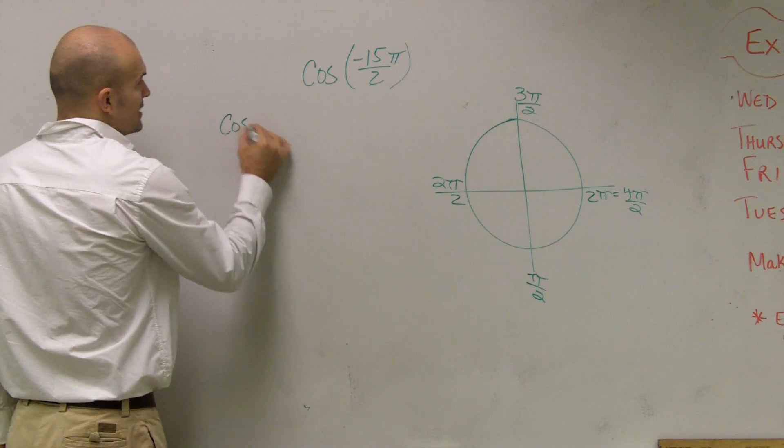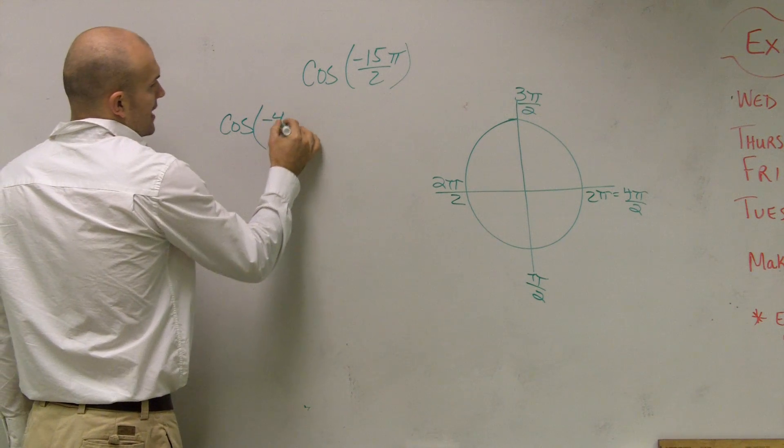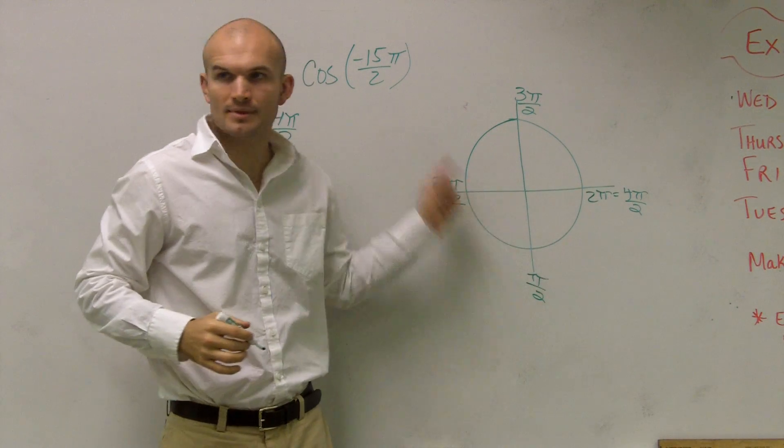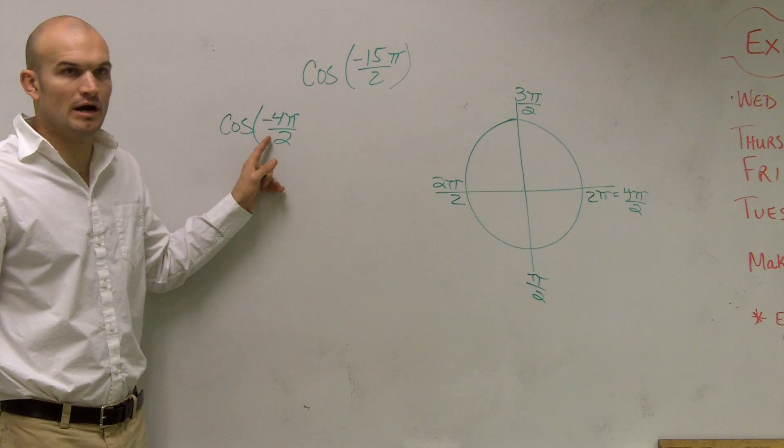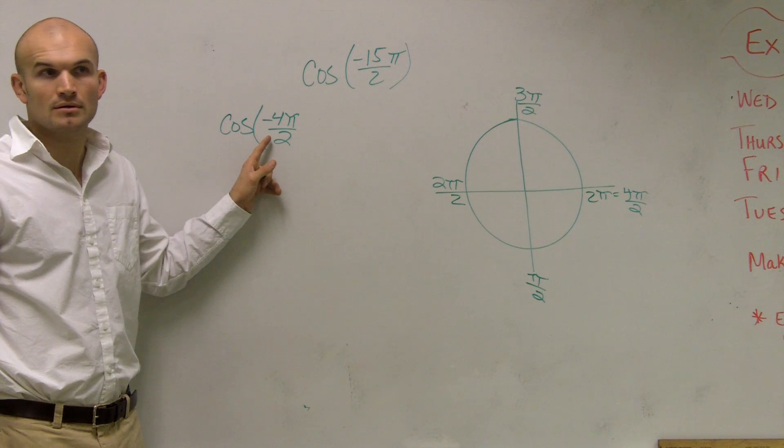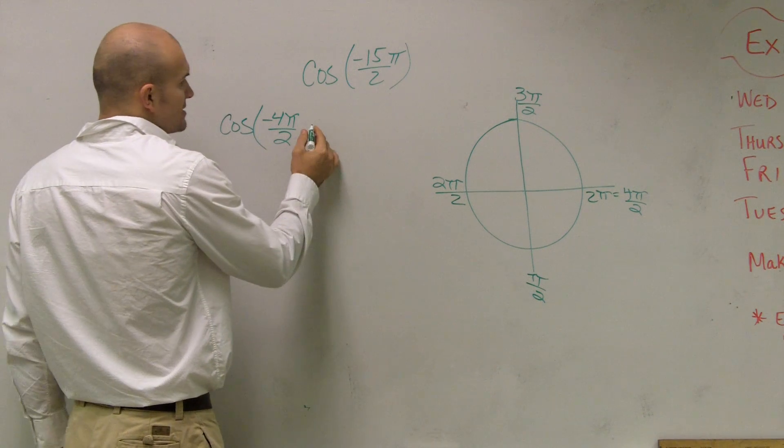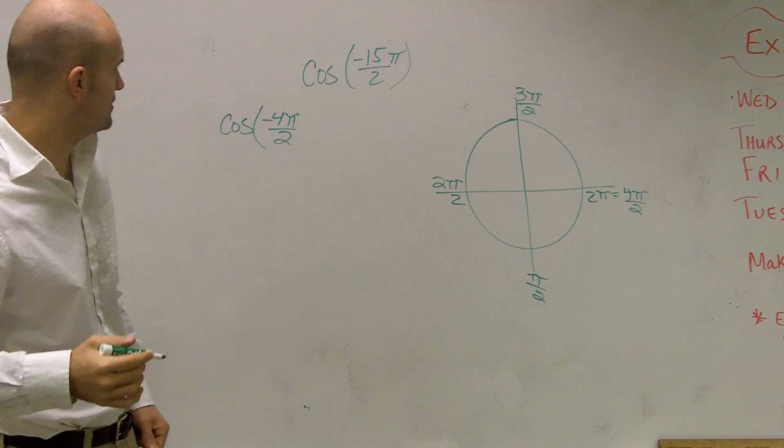So what I'm going to do is I'm going to say cosine, and I'm going to write it as a negative because we're going in the negative direction. So this is going around the circle how many times? Once.